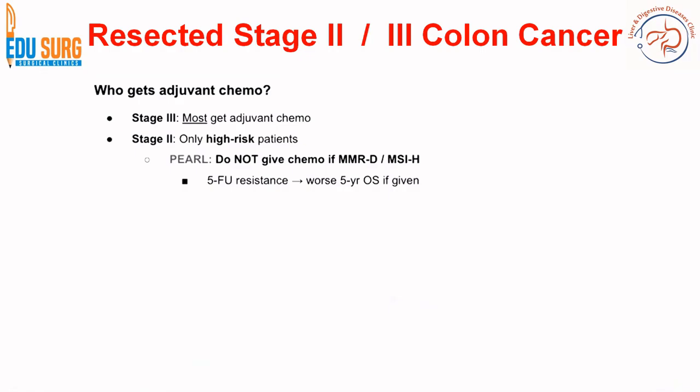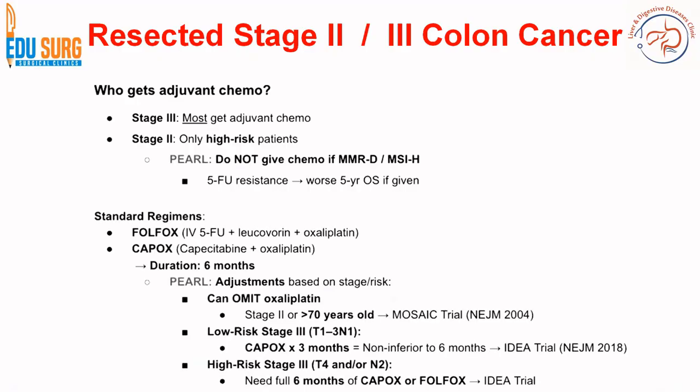We will explain what these two terms mean, because they are important for the ATOMIC trial — this trial is limited to this subgroup of patients. We don't give chemotherapy in this subgroup because they usually have resistance to this therapy and there is worse 5-year overall survival across the data.